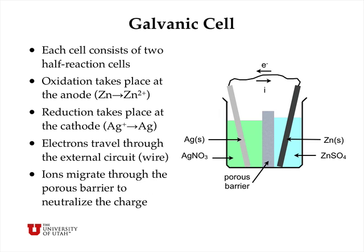We can do this by constructing a galvanic cell. For example, oxidation in this cell takes place at the anode on the right-hand side where the zinc electrode is converted to zinc ions in a zinc sulfate solution. Reduction takes place at the cathode on the left-hand side where silver ions from a silver nitrate solution are deposited as silver metal on the silver electrode.